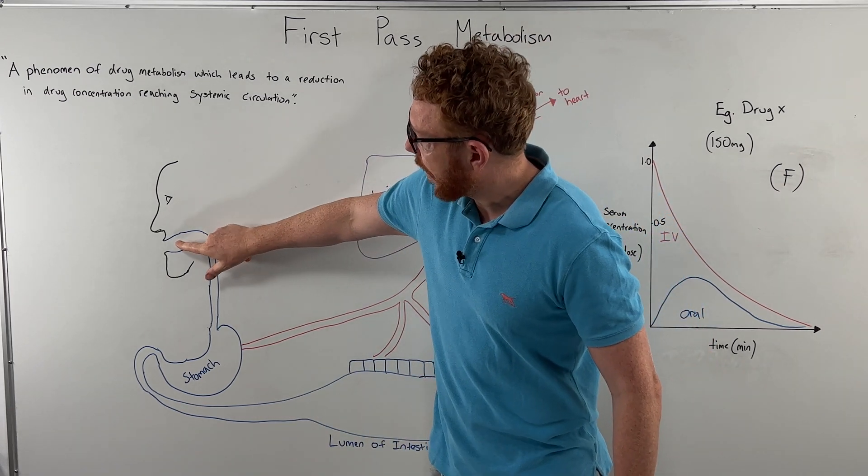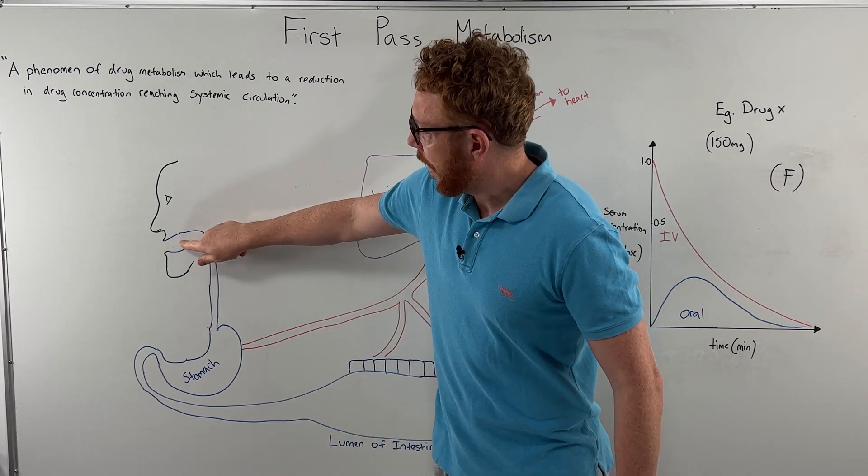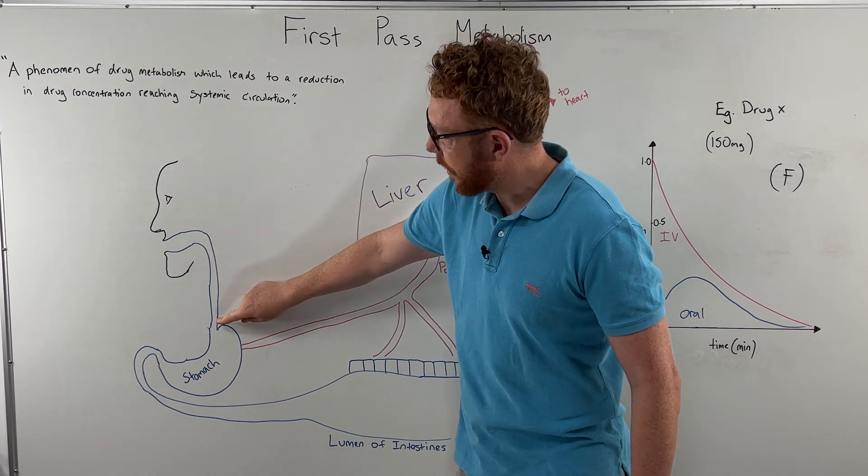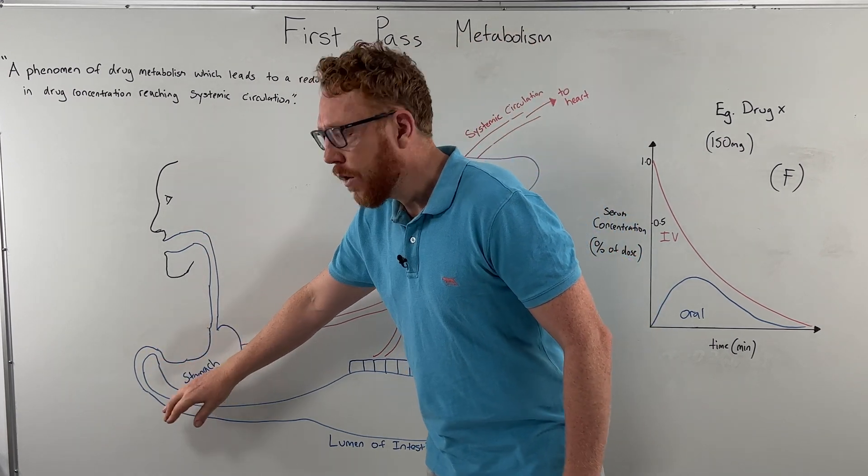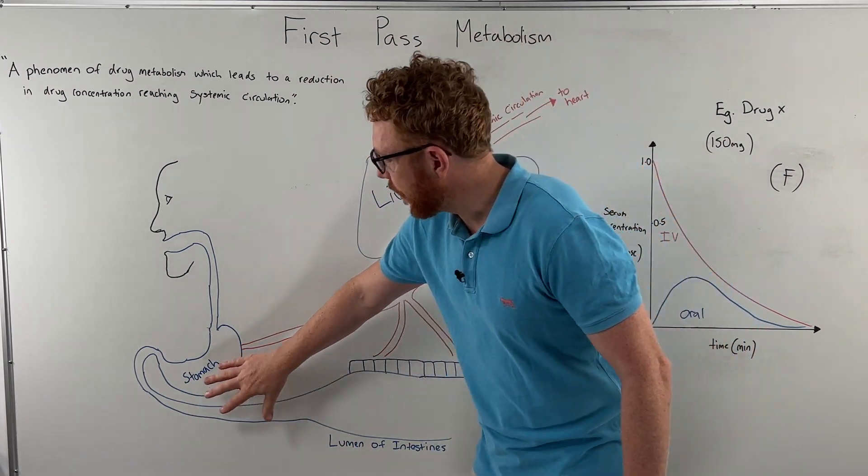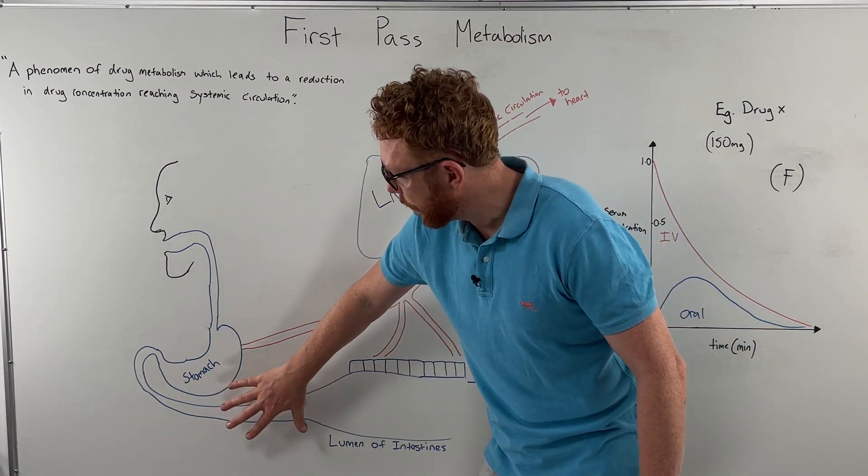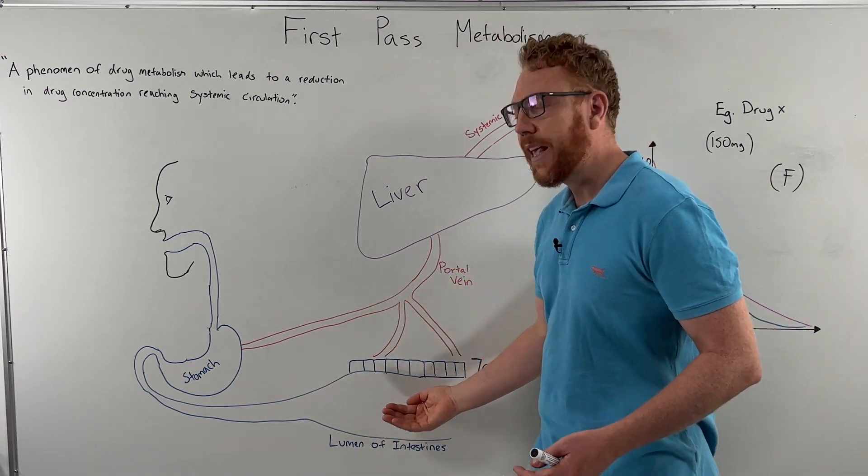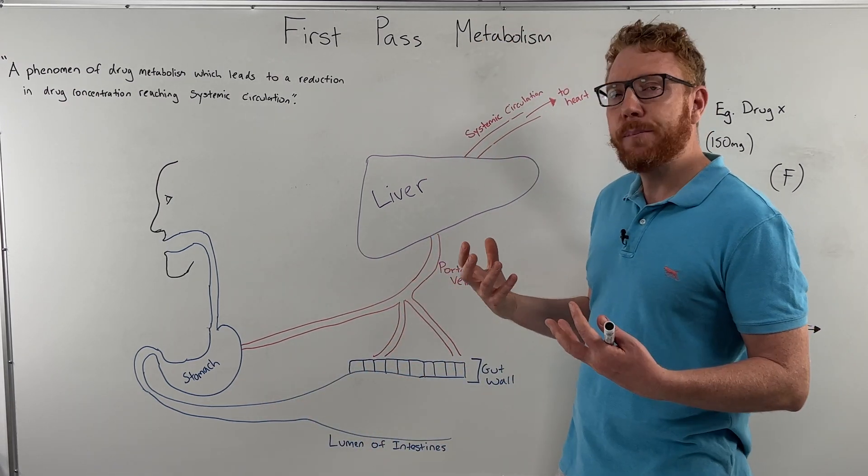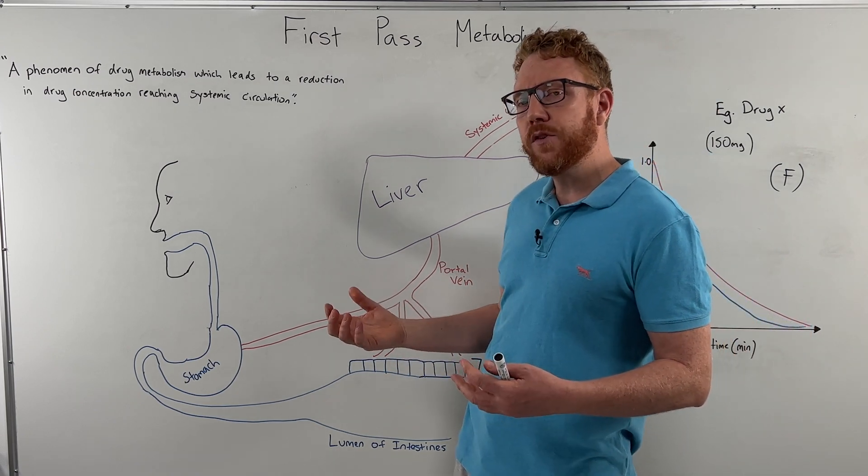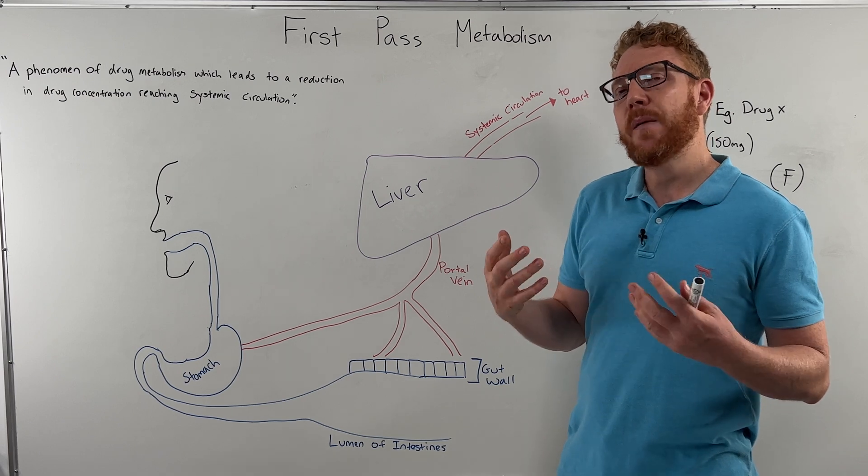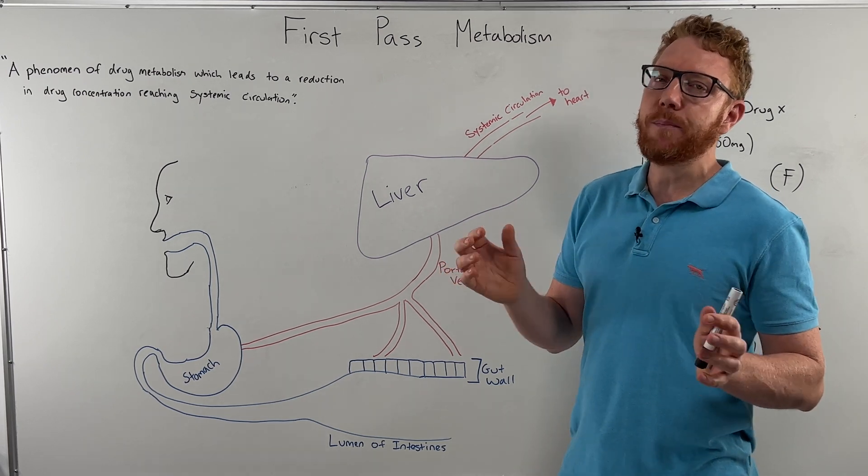So let's say we give a capsule in an oral medication form. It has to go into the mouth, past the esophagus, through the stomach, where most of the absorption takes place, which is in the small intestine. So how well is that drug absorbed? That's important because if it's not well absorbed, not much will get into the systemic circulation. So some drugs have very poor absorption.